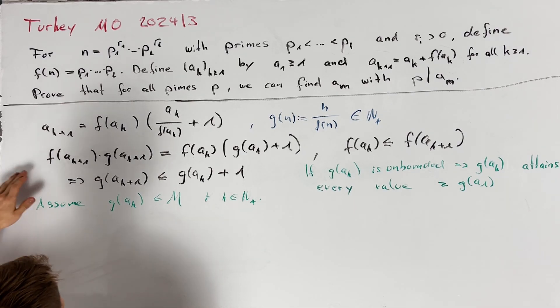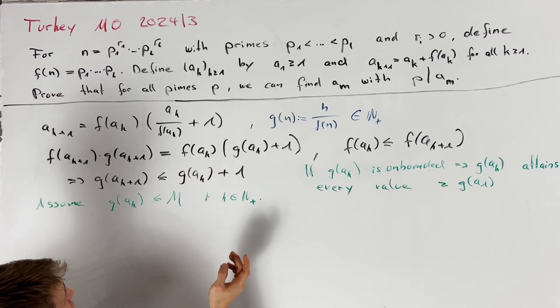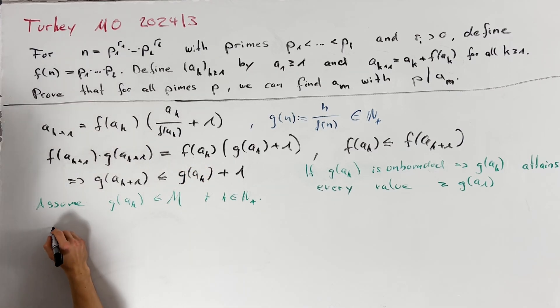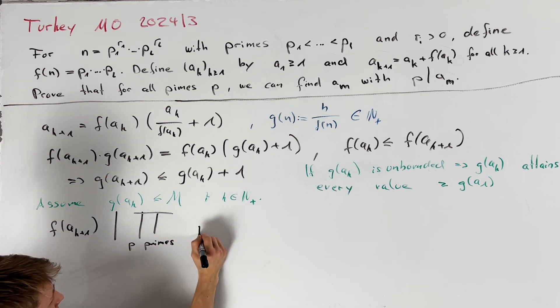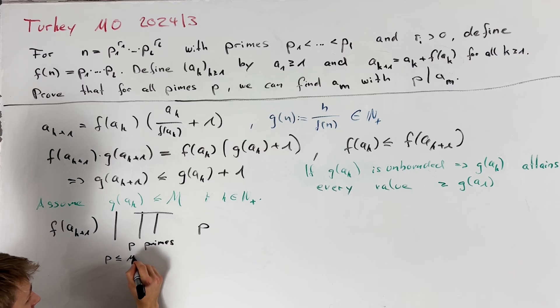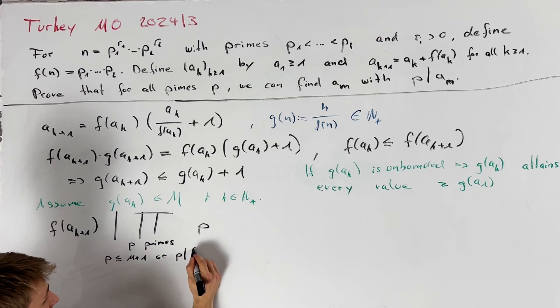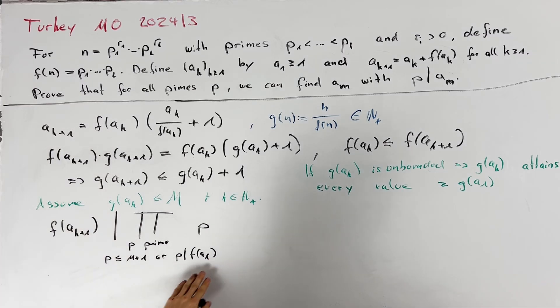This implies that all the prime divisors of f of a_{k+1} are prime divisors of f of a_k or are less than or equal to m plus 1. So we can write that f of a_{k+1} divides the product over all primes p such that p is less than or equal to m plus 1 or p divides f of a_k. Using the same divisibility condition for k minus 1 instead of k and using the fact that f of a_{k+1} is square free we get that the same holds for k minus 1 instead of k here.